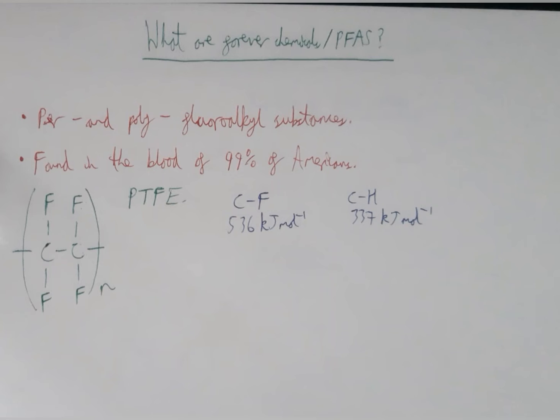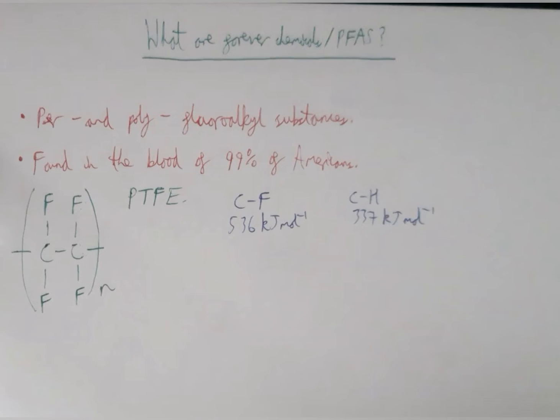These forever chemicals have very interesting non-stick, stain repellent, waterproof properties which make them useful materials. For example, they're used in anything ranging from the waterproof coating on tanks to stain-resistant carpets to non-stick coatings on frying pans, which brings us to PTFE, better known as Teflon, which is used as a non-stick coating. This is because of its properties due to its structure.